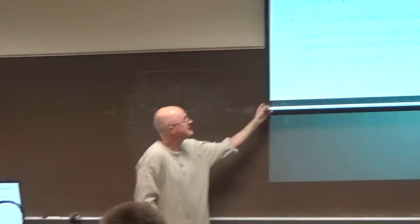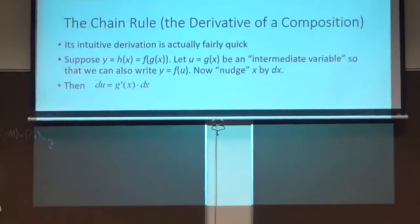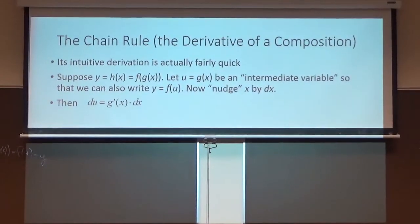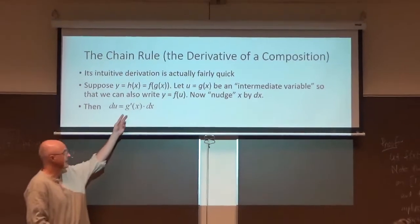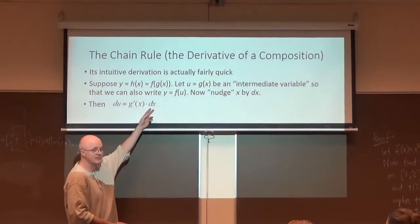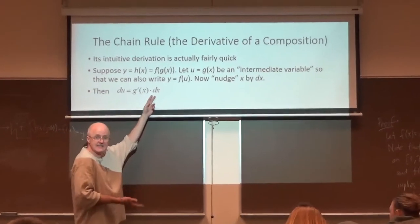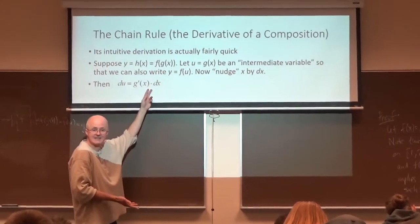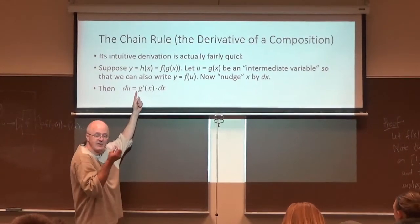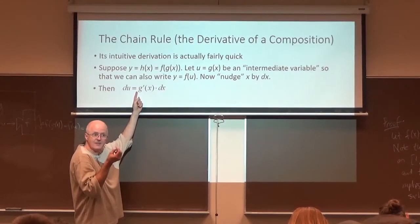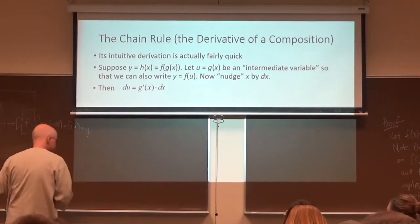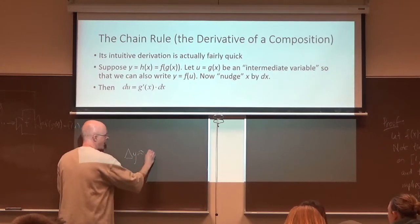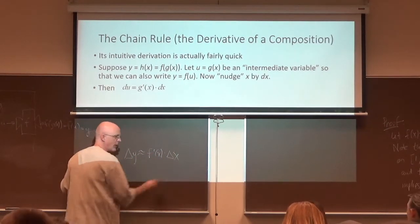What happens? You can write du is g prime of x dx. Where did that equation come from? Well, think of it as a rate of change. It's the rate of change of u with respect to x times the little change in x. This is essentially linearization. The tangent line approximation in a sense. Except we're writing it equals. Because these are infinitesimal changes. The corresponding approximate equation we wrote before was delta y is approximately f prime of x times delta x. That's one way to write it.